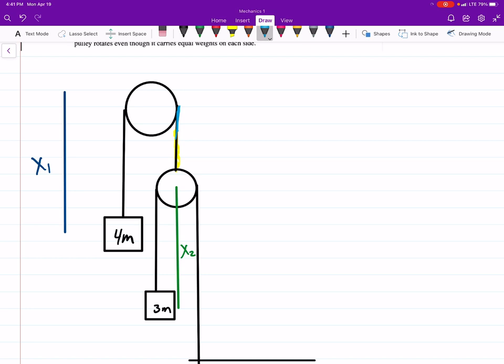Then this length right here, this length here, is going to be L1, which is the length of the wire, minus x1. Since x1 is, this is x1. So that's L1 minus x1.